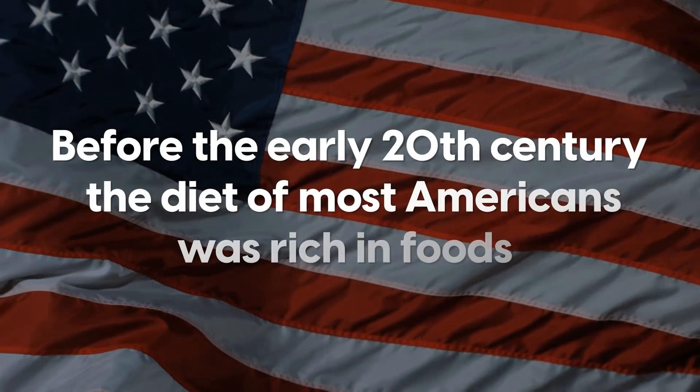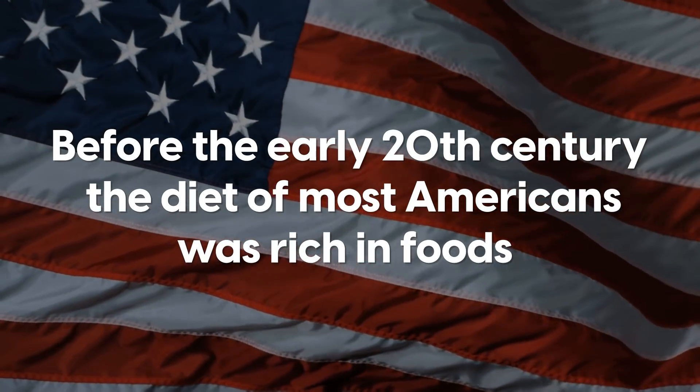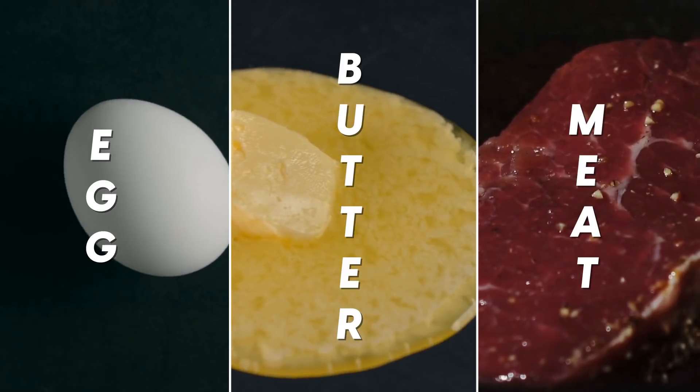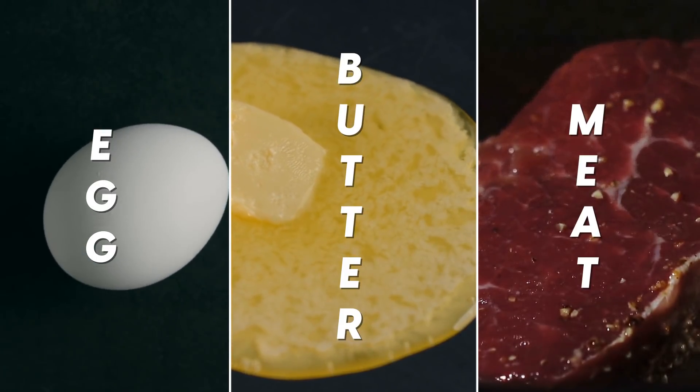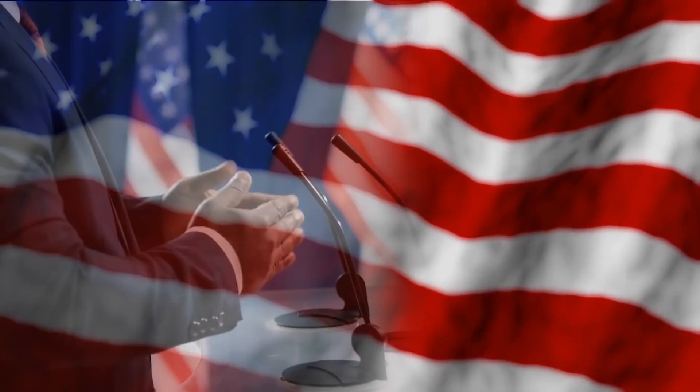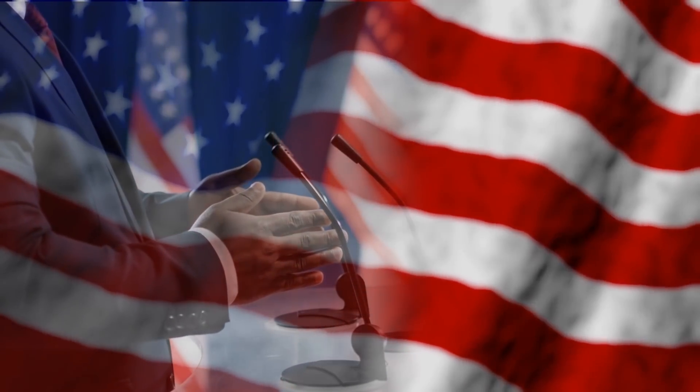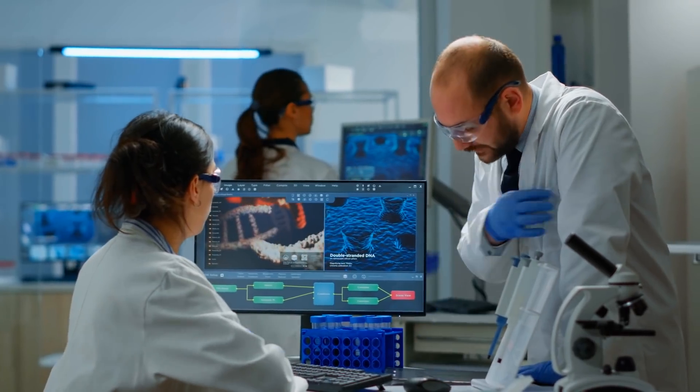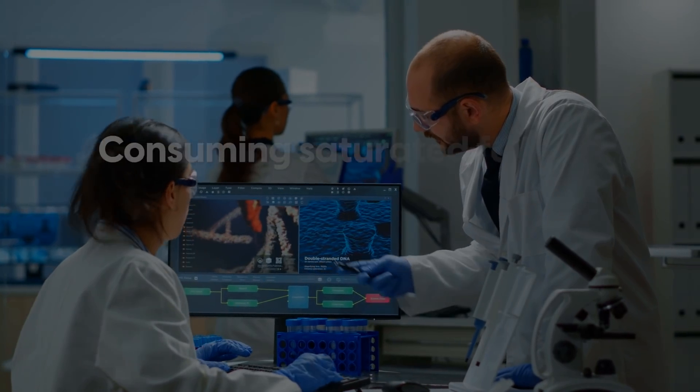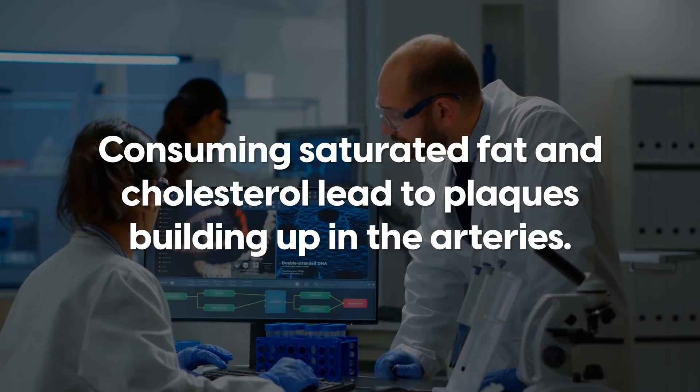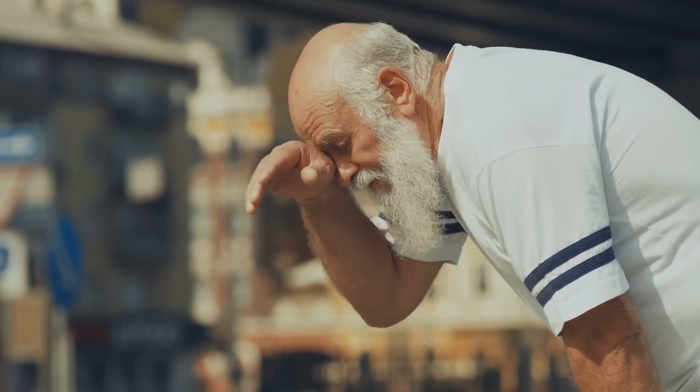Before the early 20th century, the diet of most Americans was rich in foods such as eggs, butter and meat. These are foods that are high in cholesterol and saturated fat. And yet, heart attacks were rare. It wasn't until 1955 when the US President Eisenhower had a heart attack that heart disease was thrust into the public eye. Researchers at the time developed a theory that consuming saturated fat and cholesterol led to plaques building up in the arteries. Thus began the attack on cholesterol.